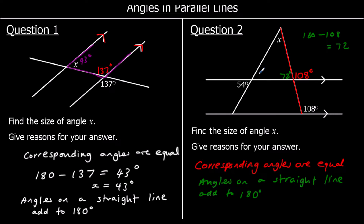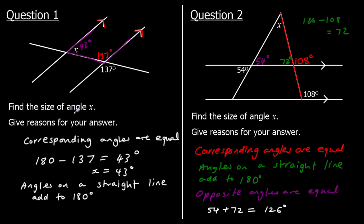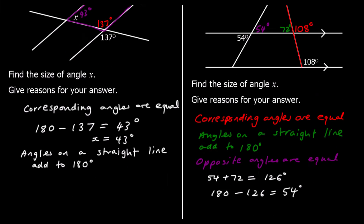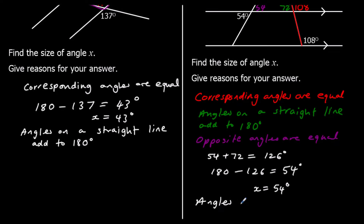Then we can say that opposite angles — or vertically opposite angles — are equal. And finally, angles in a triangle add up to 180 degrees. So we've got 54 and 72 so far. 54 and 72 make 126 degrees. 180 minus 126 is going to be 54 degrees. So X equals 54 degrees, and angles in a triangle add to 180 degrees.